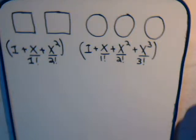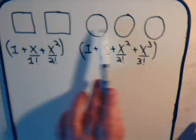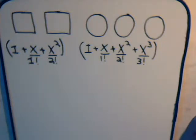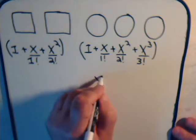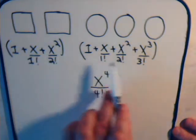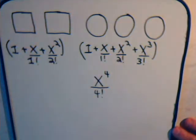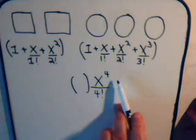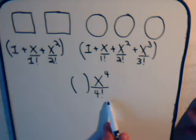Using the same logic as before, when we consider all of the objects together we multiply the two exponential generating functions together. When we ask how many different ways we can select 4 objects where the order matters, the answer is the coefficient of x to the 4 divided by 4 factorial in that product. That coefficient tells us the number of different permutations of 4 from these 5 objects.